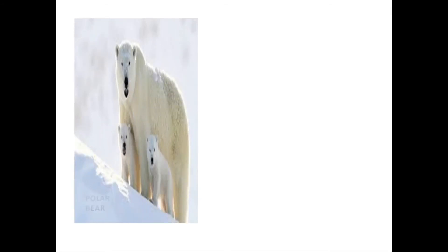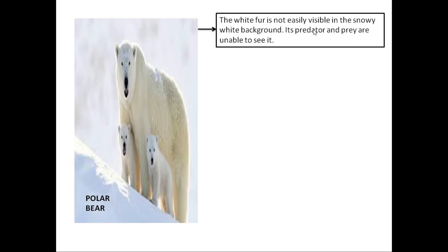Here we see a polar bear with her cubs. The polar bear's white fur makes it not easily visible against the snowy white background. Predators cannot easily see it, and prey are not even aware of its presence because of the white fur blending with the snowy background.